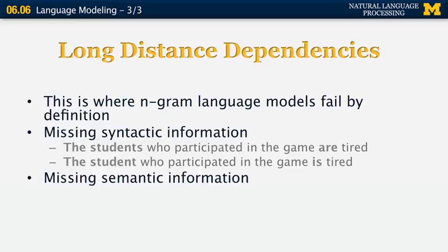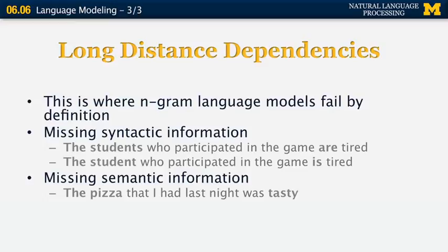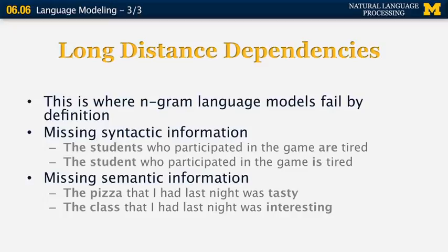The same problem applies to missing semantic information. Consider 'The pizza that I had last night was tasty' — 'tasty' modifies 'pizza,' which makes semantic sense. But if you change it to 'The class that I had last night was interesting,' 'tasty' no longer fits. Yet the trigram model would assign it the same probability in both cases, because the two words before it are 'night' and 'was.' The trigram n-gram model misses the semantic information due to the long distance between semantically related words.